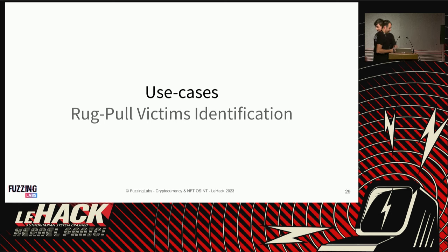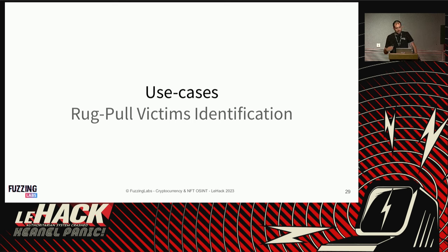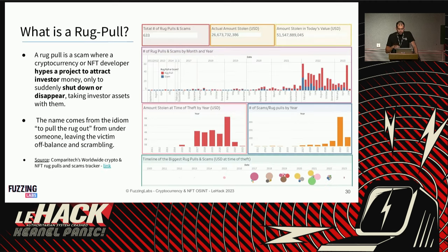Clustering addresses lets us associate transactions to the same user across multiple addresses. For rug pull victim identification, a rug pull is when a project — like an NFT collection — emerges, the developers hype it, get influencers to promote it, and once the money arrives in the contract, they dump everything and disappear. This is becoming increasingly common.